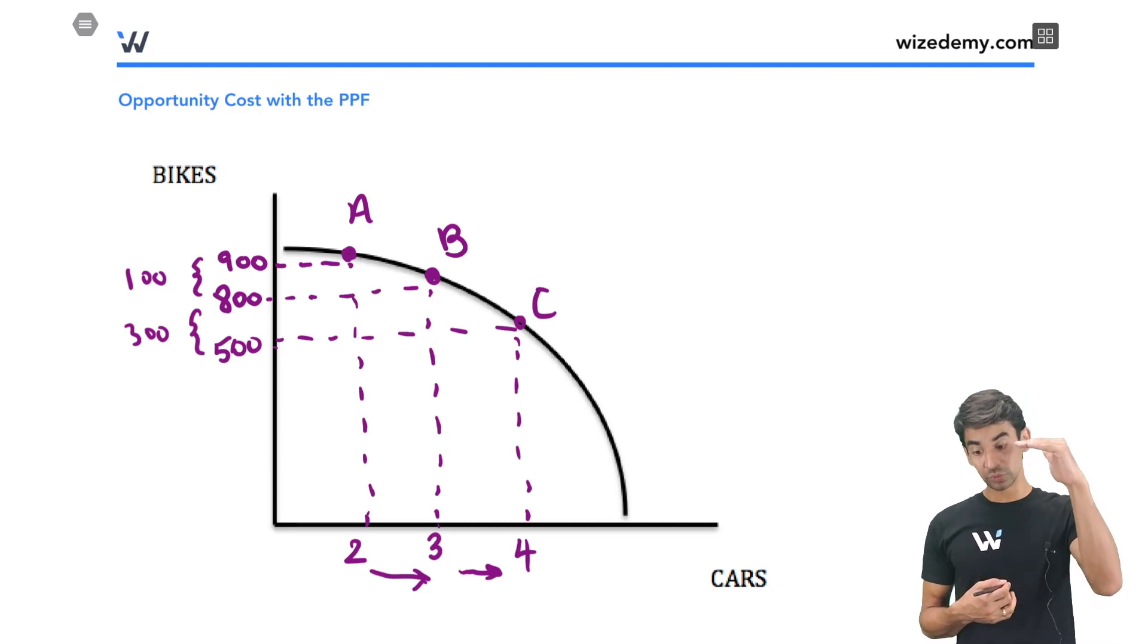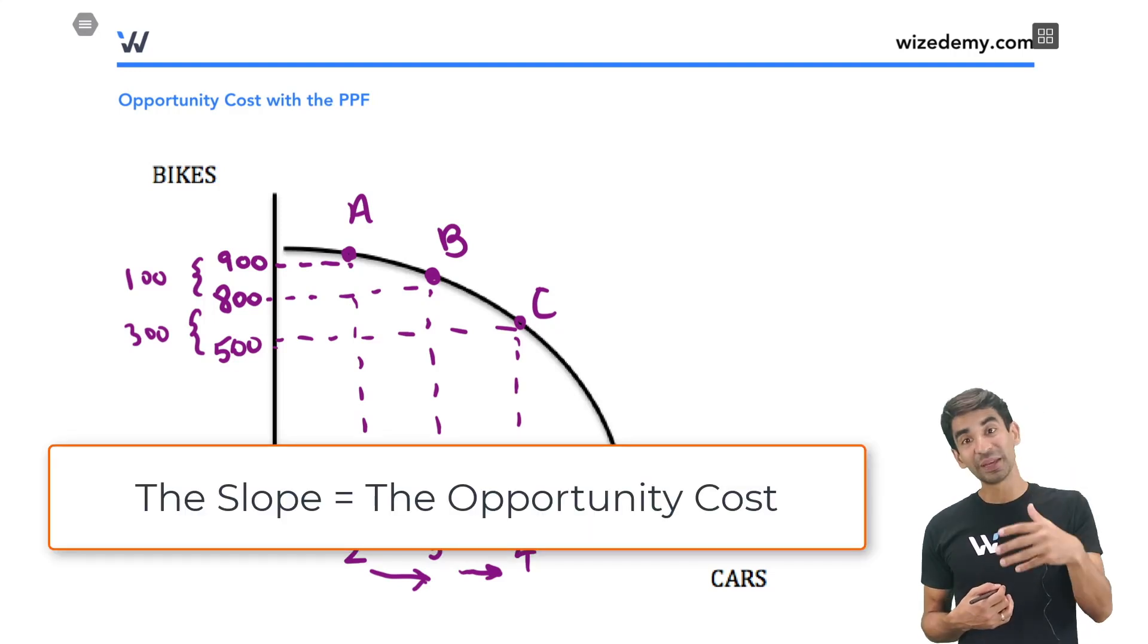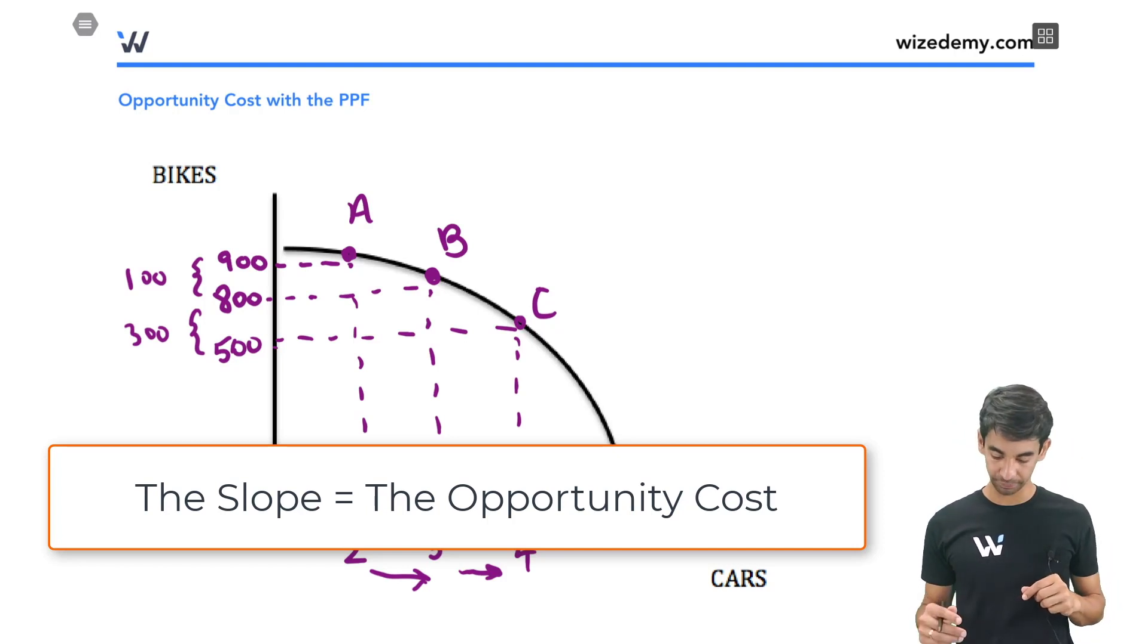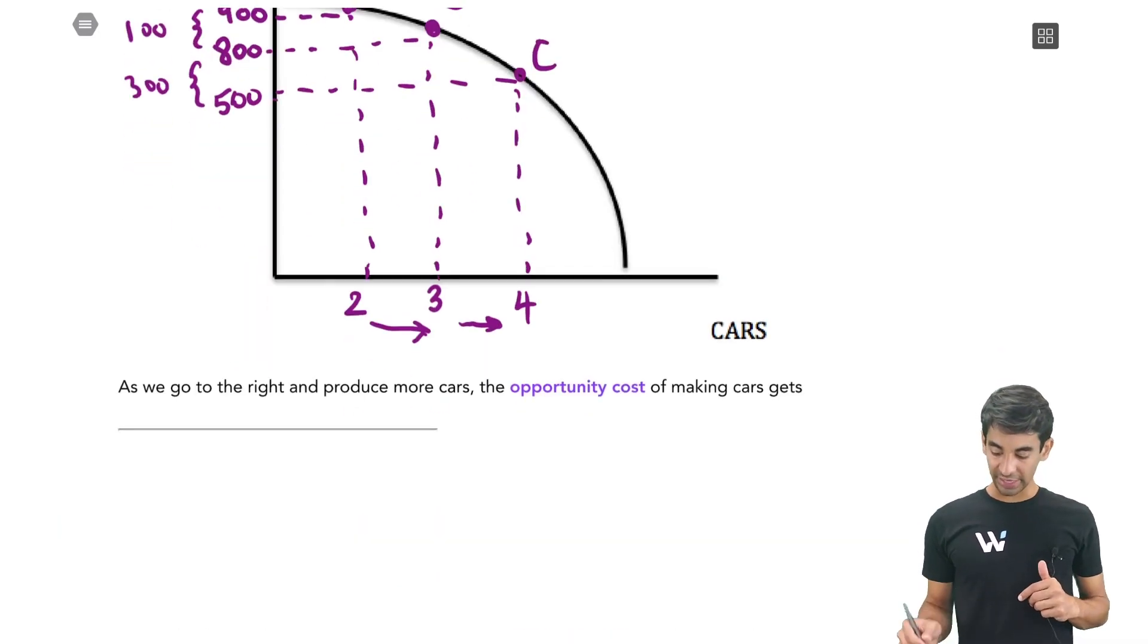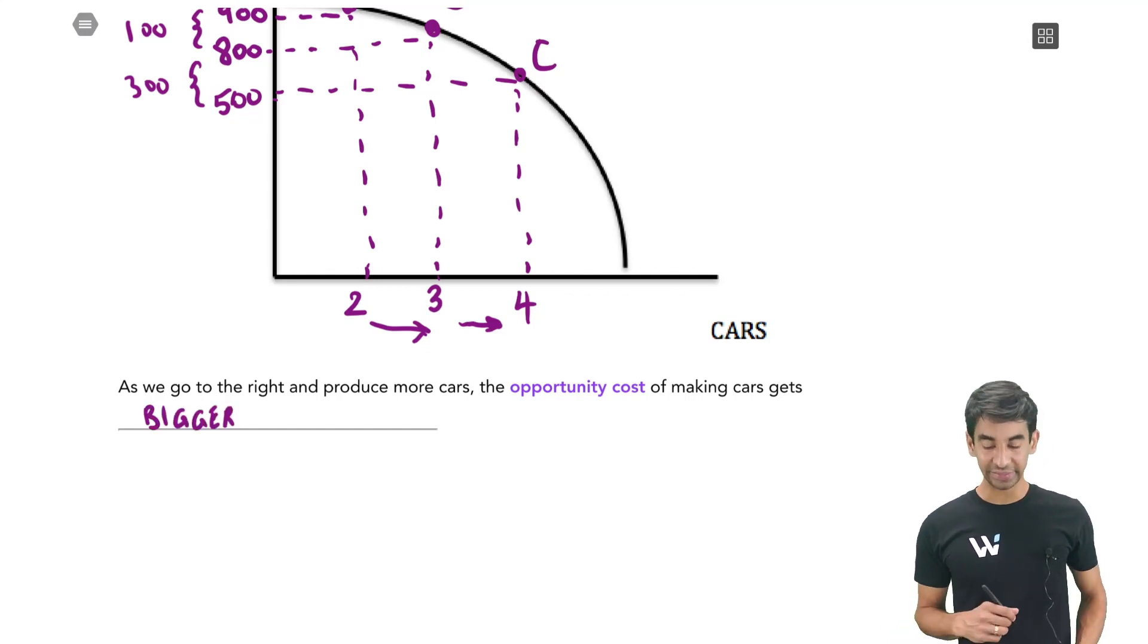You see from point A to B, it was only 100 bikes. And then as you go to the right, you see the PPF is getting steeper and steeper. So as it gets steeper, the opportunity cost is getting bigger. So the slope is basically the opportunity cost. When it's a flat slope means small opportunity cost. And then as it gets steeper, that means bigger opportunity cost. So we can fill that out underneath. As we go to the right and produce more cars, the opportunity cost of making cars gets bigger.